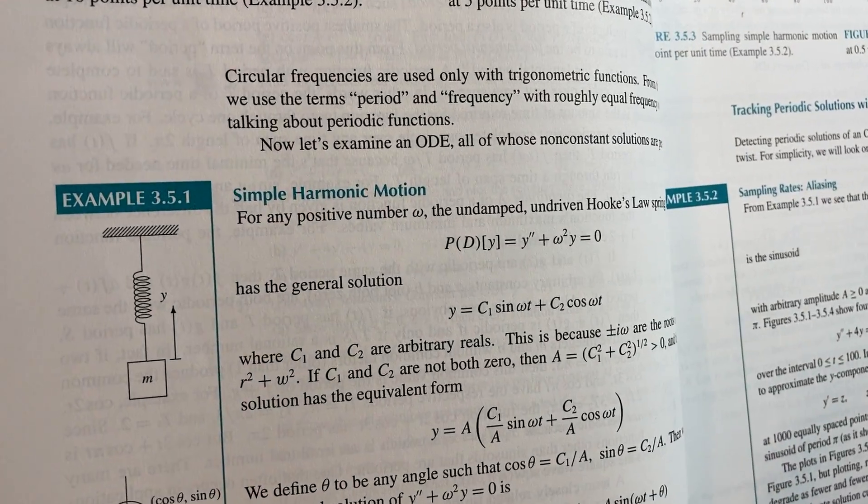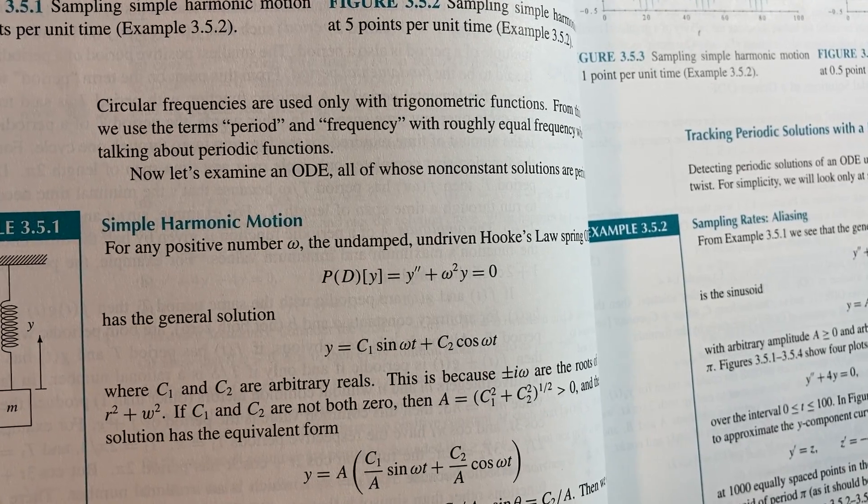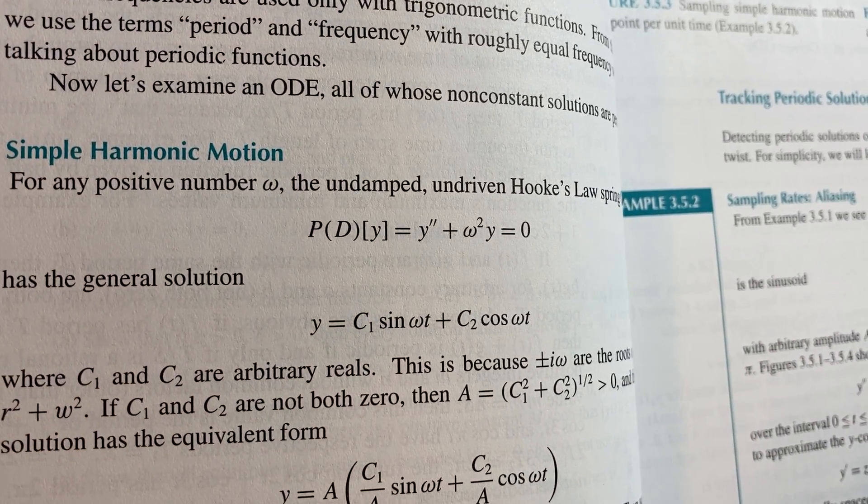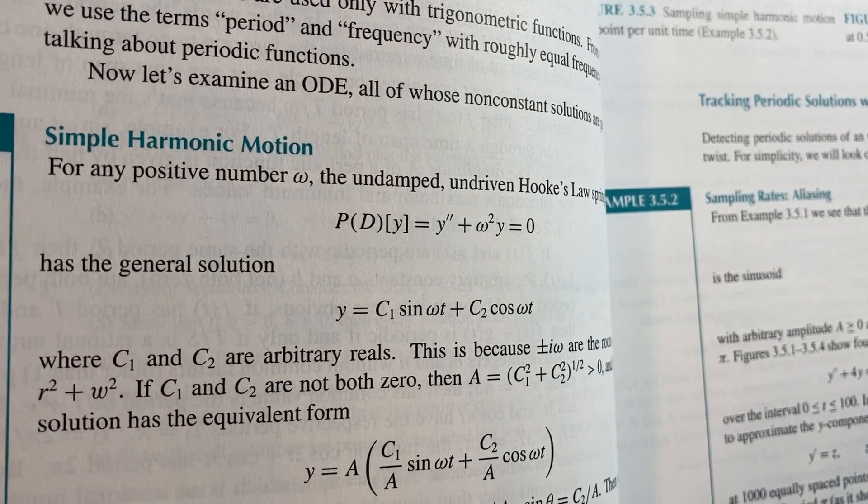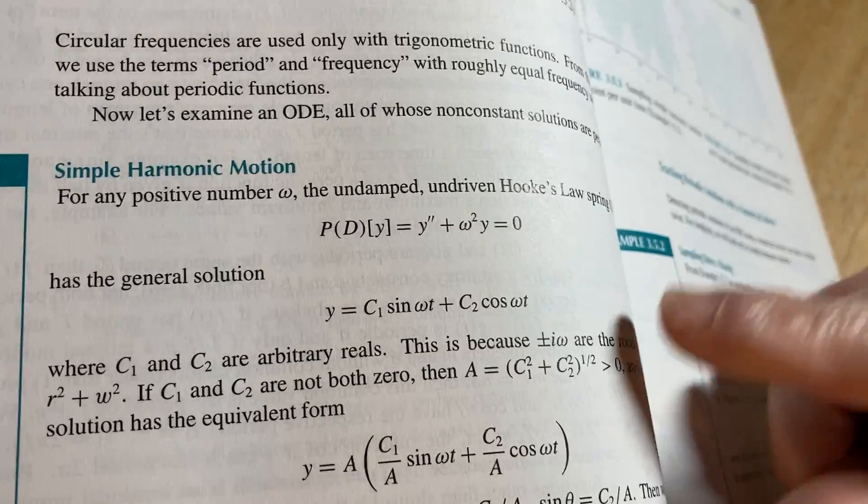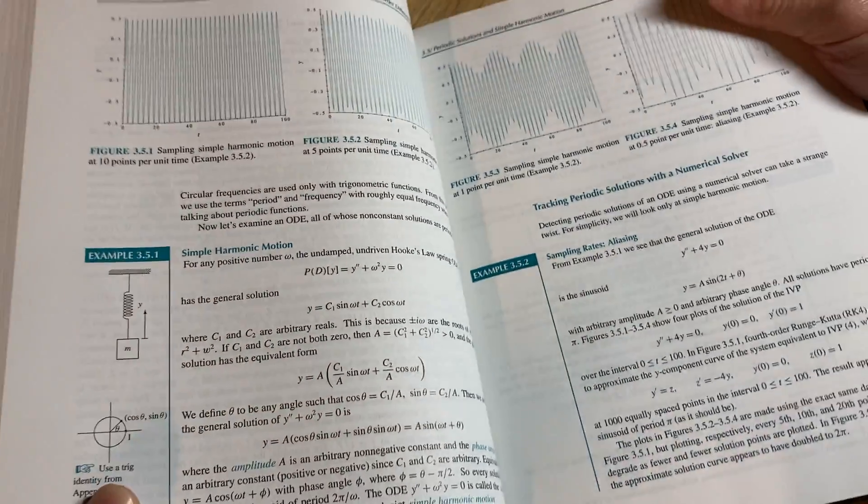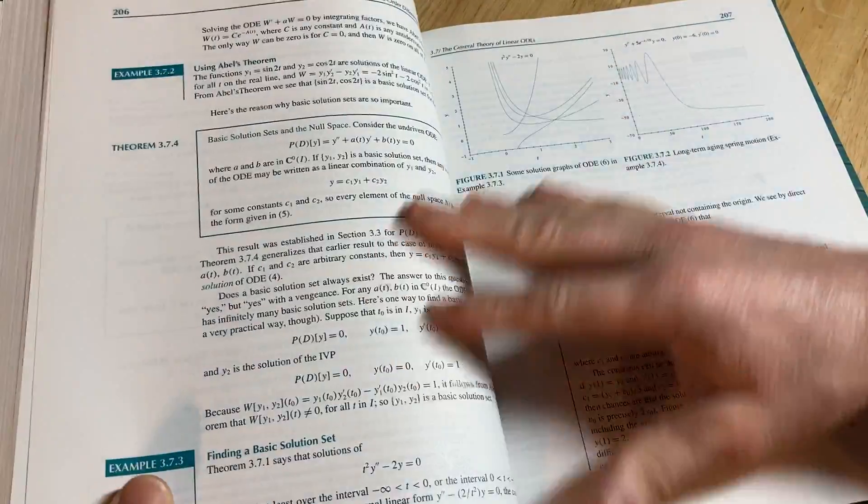Here's a simple harmonic motion application. For any positive number omega, the undamped, undriven Hooke's Law spring ODE, and there it is. Has the general solution, and there it is. That eventually becomes obvious at some point, like that leap they're making, but they explain it. Yeah, it's good stuff.